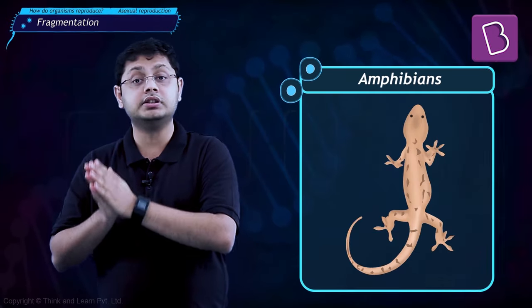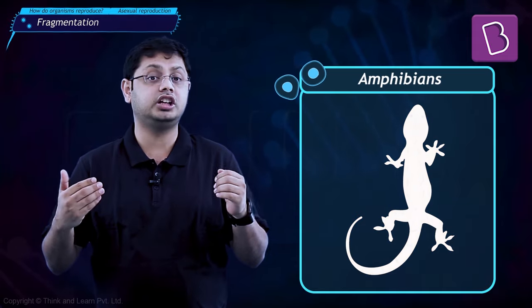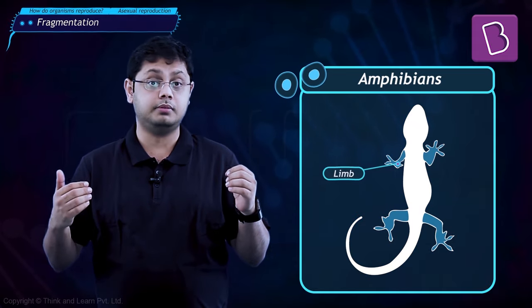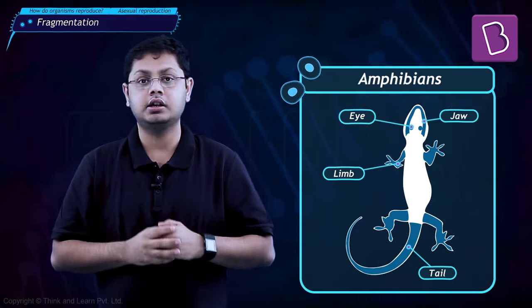A lot of species can regenerate at least a few organs of their bodies in times of need, and even us humans can regenerate our liver. Among the vertebrates, tailed amphibians and certain lizards are highly adapted to regeneration of their limbs, jaws, tails, and even their eyes.